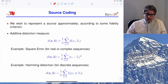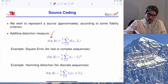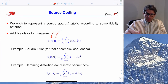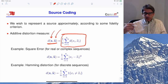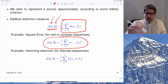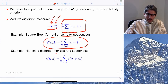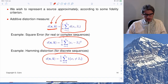In general, we define the original source sequence X and a reconstruction X̂, and define a distortion measure — for example, squared distortion (normalized mean squared error per symbol) or Hamming distortion (normalized number of differences). There are many possible distortion measures.